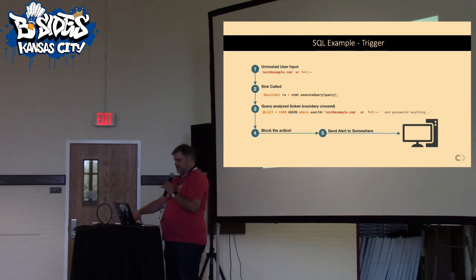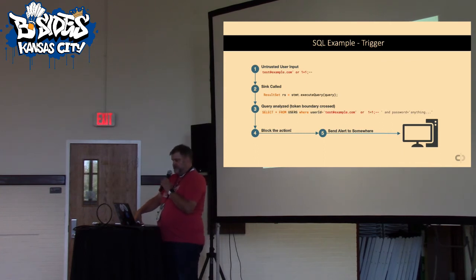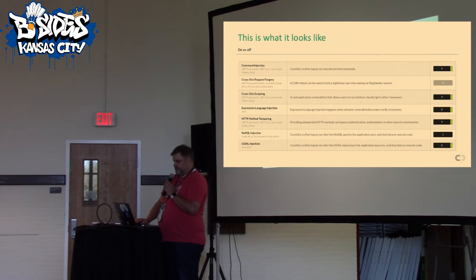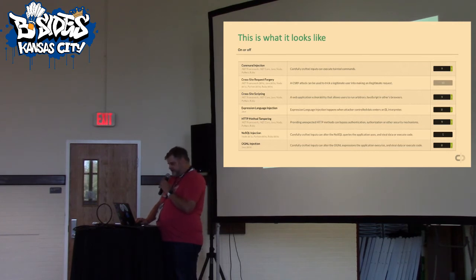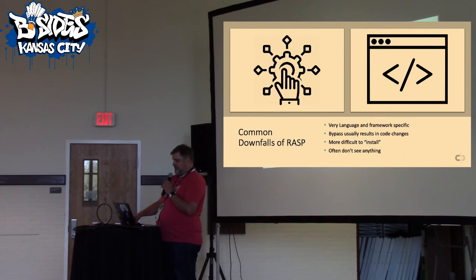So it takes that untrusted user input, the sink called execute query is called, we analyze and tokenize that query, and then an alert is sent somewhere saying 'we blocked this, this is bad.' Tuning a RASP looks like this: it's either on or it's off for the most part. There are cases where you can add validators and sanitizers, but for the most part you just turn it on.